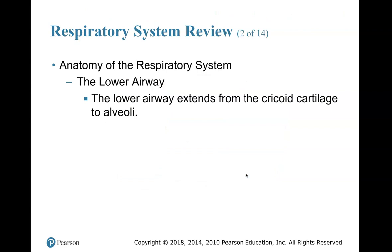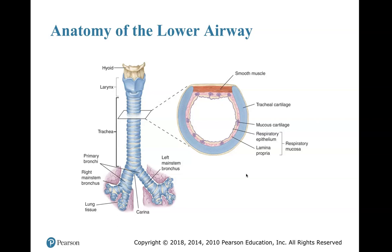The lower airway extends from the cricoid cartilage to the alveoli. Here's a review of the lower airway. The cricoid cartilage is right here — your trachea begins here and goes down. They took a cutaway of what the trachea looks like on the inside. Review this so that you know this information for the next test.